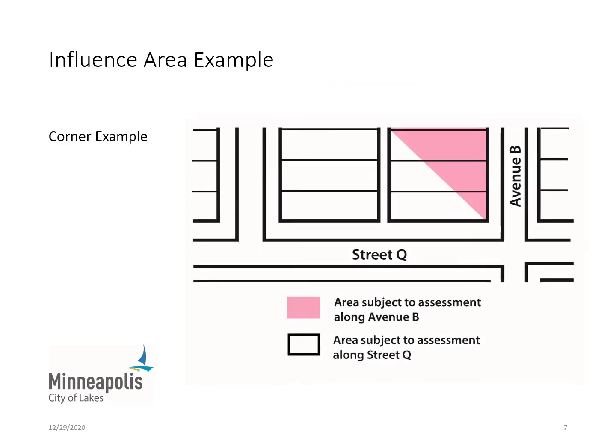In this example of a rectangular corner property, only the relatively small pink area will factor into their assessment for Avenue B. However, they will be assessed based on the white area when Street Q is improved.